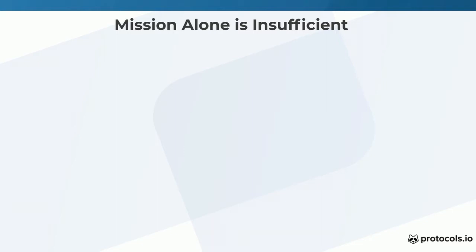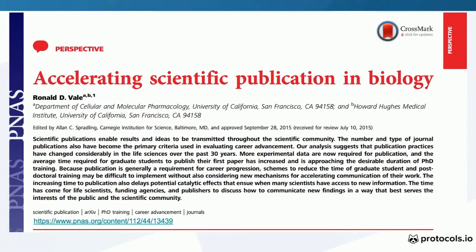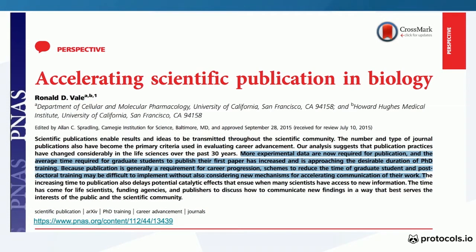In 2015 there was a paper, first on BioArchive and then in PNAS, called 'Accelerating Scientific Publishing in Biology' from Ron Vale at UCSF. He's a professor who is a huge advocate for sharing preprints in biomedical sciences. He looked at how big our papers are now compared to the 1980s, how complicated they are, and how long it takes UCSF students to publish their first paper. He highlights that more experimental data are now required for publication, and the average time required for graduate students to publish their first paper has increased and is approaching the desirable duration of PhD training.